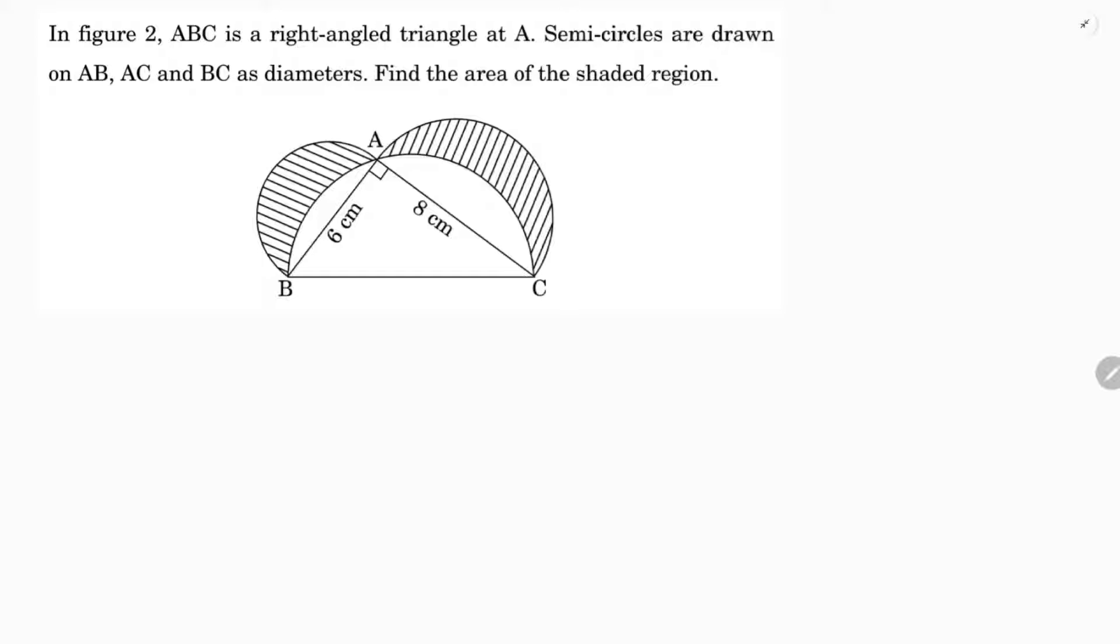To solve this problem I'll use the area of semicircle formula. Area of semicircle is pi r square by 2, and I'll use the Pythagorean theorem. So first I'll use Pythagorean theorem for triangle ABC and find BC.